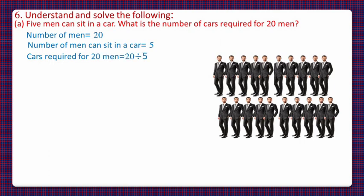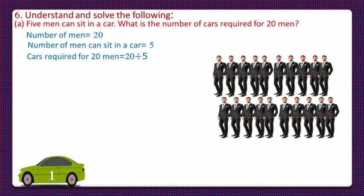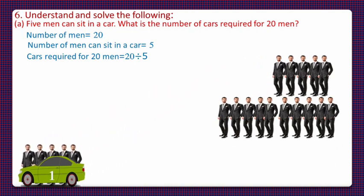First of all, let us divide with repeated subtraction method. Out of total 20 men, 5 men can sit in first car. So, men left behind are 20 minus 5 that is 15.